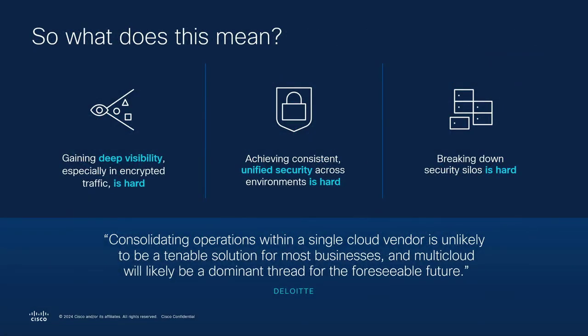So what does this ultimately mean? Gaining deep visibility into your environment, especially when there's encrypted traffic, is really hard. And achieving consistent and unified security across these environments is also super complicated. You have different cloud environments, different APIs, different tools, different API processes — all of these lead to a patchwork of solutions. Breaking down these security silos is hard, and consolidating operations within a single cloud vendor is unlikely. Almost all enterprises have a multi-cloud and hybrid strategy, so you need a tool that can meet that same security premise.